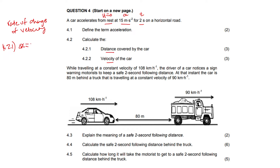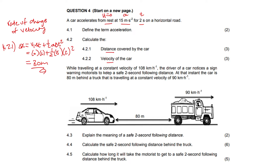So distance equals — please always start with your formula, it's very important, you do get a mark for it. Our initial velocity is 0, our time is 2, plus half of the acceleration which is 15, and time again is 2. Type all of that into your calculator and you will get 30 meters. That is your final answer — 30 meters is the distance covered by the car.